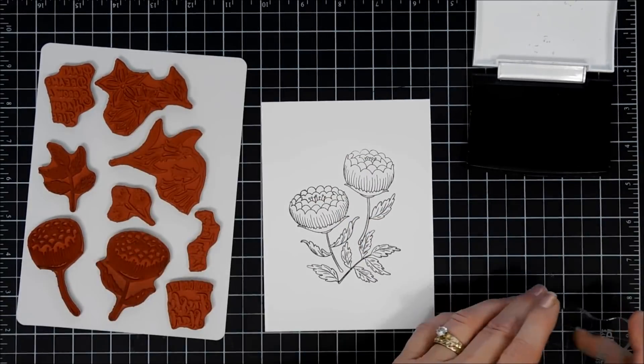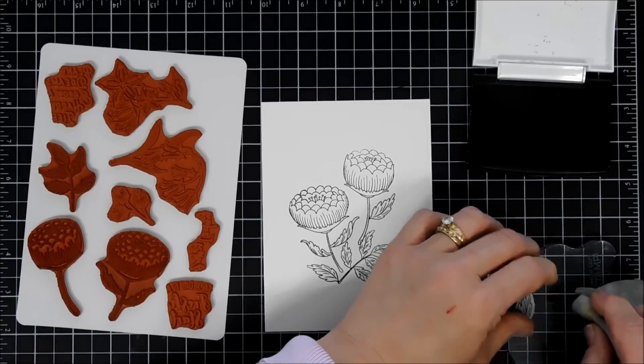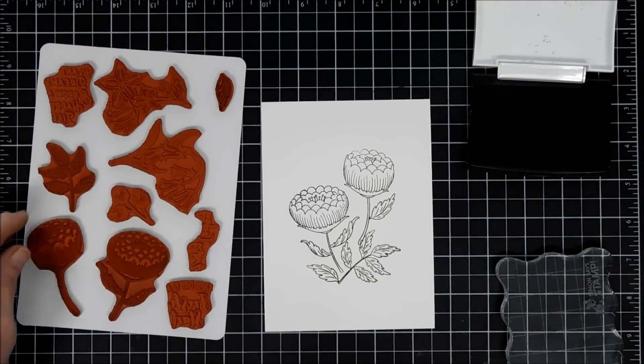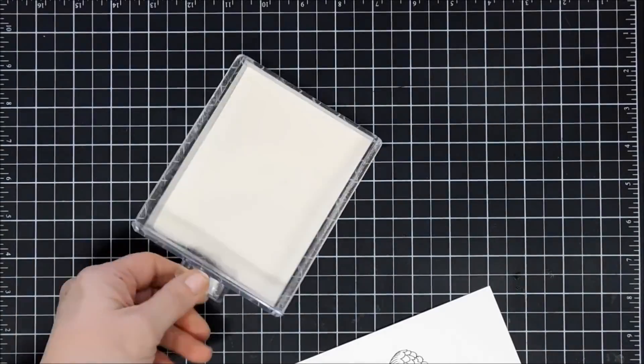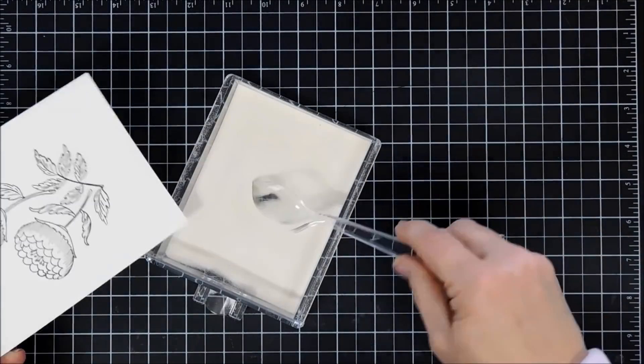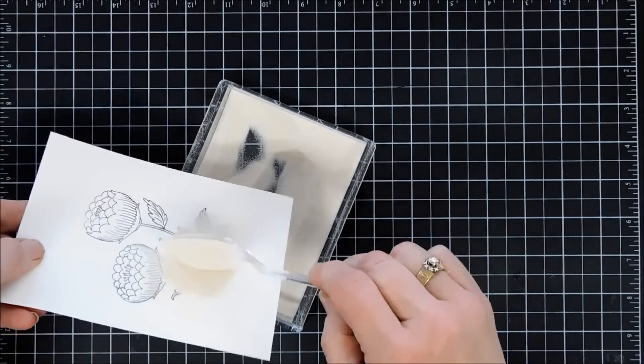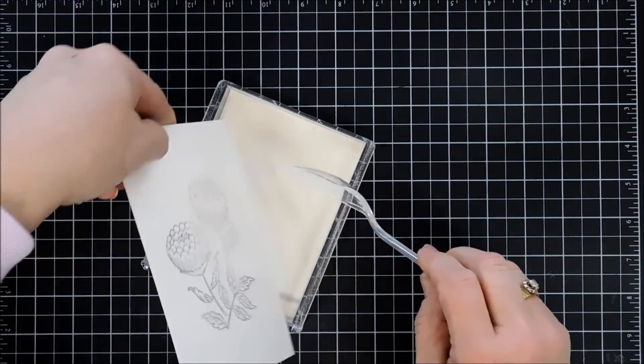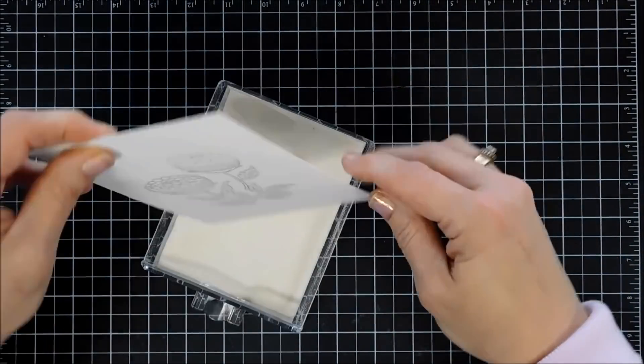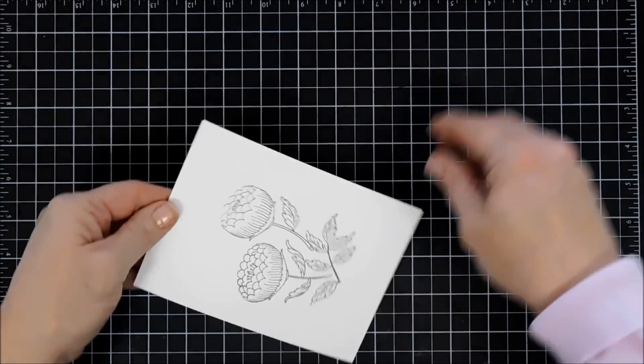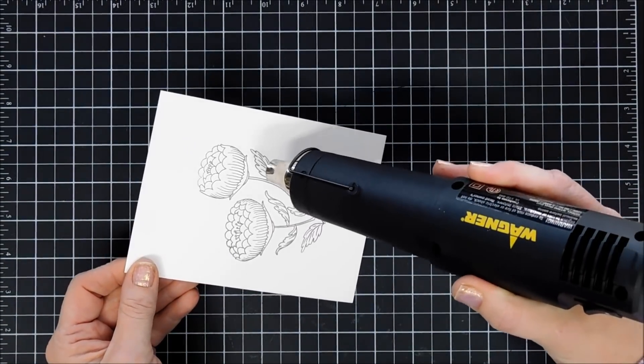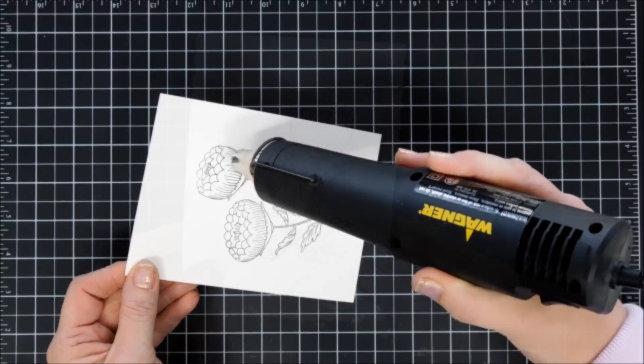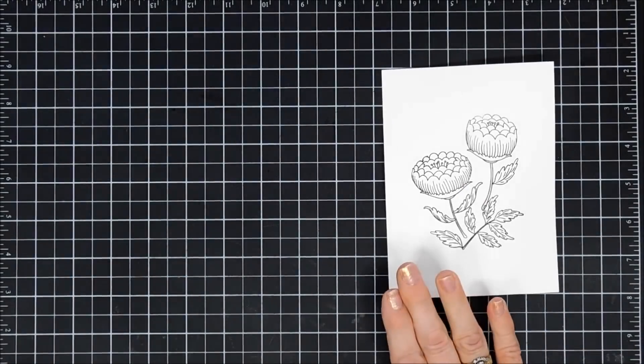Once my images are stamped, I use VersaFine ink because we're going to go over our stamped images with clear embossing powder. I like to go over my images when I watercolor because it helps contain my watercolor and makes less of a mess. I'm just going to use my heat gun and melt that embossing powder.